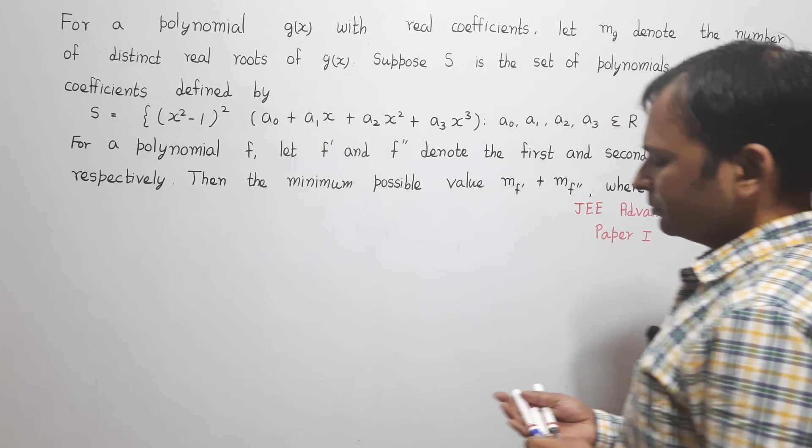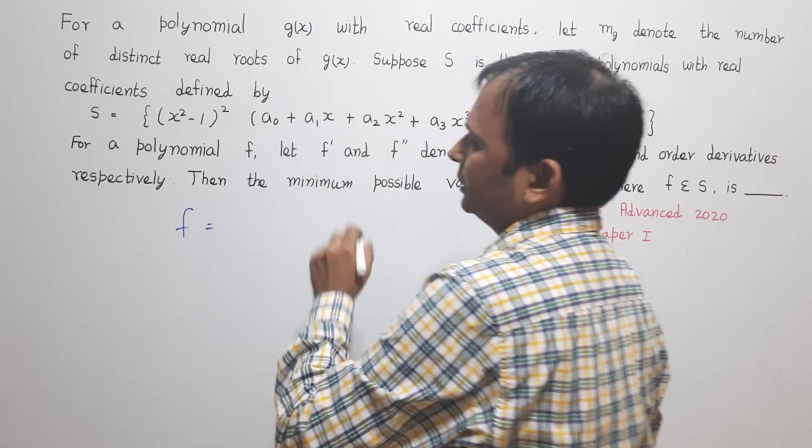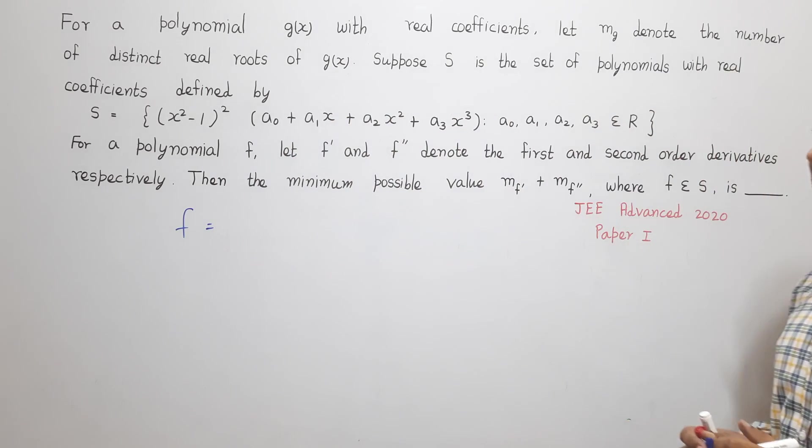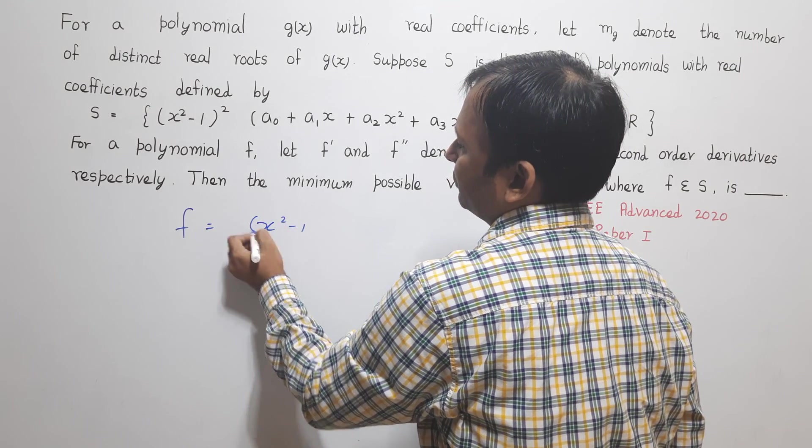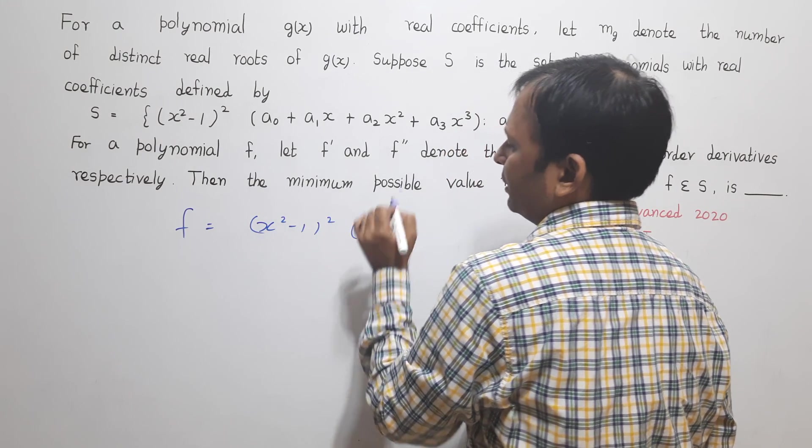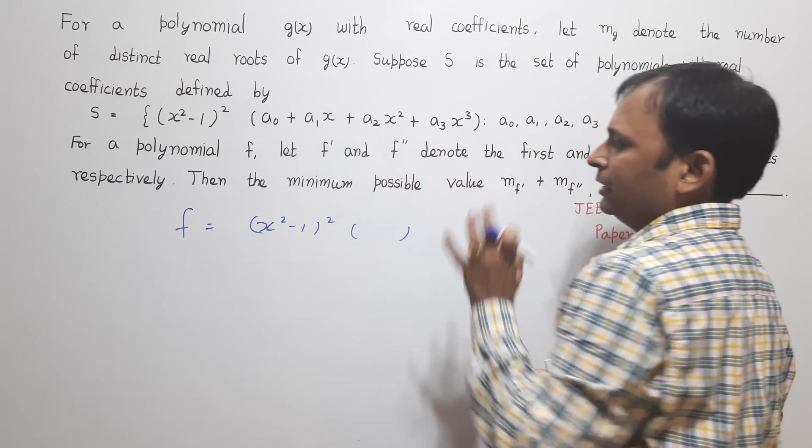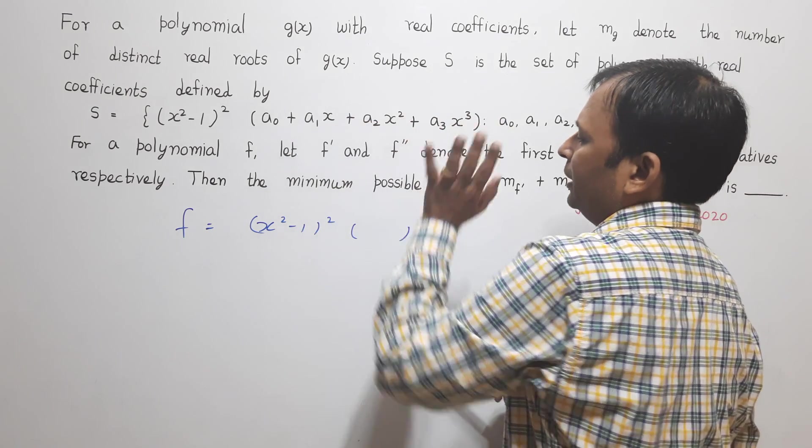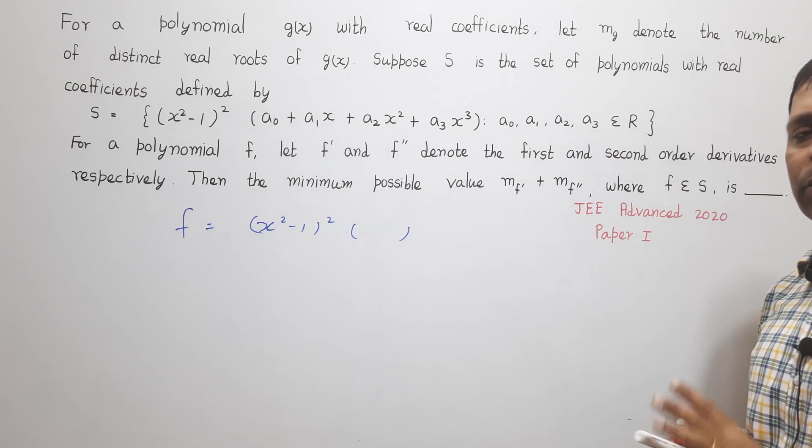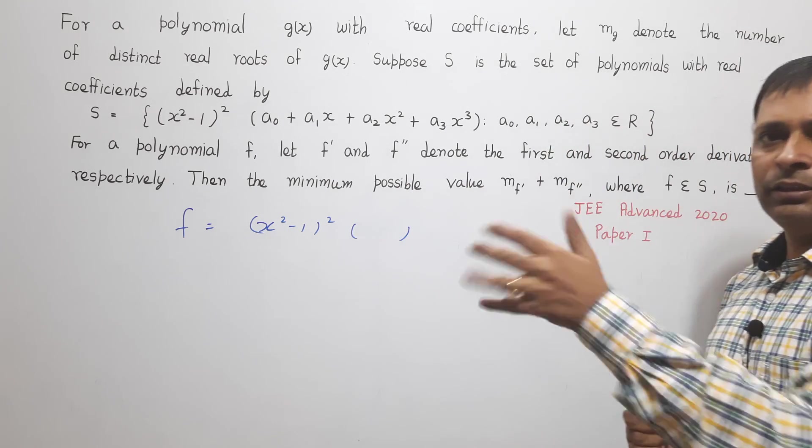I will say there is f which is there in the set S. This f will be of the form (x²-1)² multiplied by some bracket. I don't know what is this bracket because the question is not specified anything about it, but this bracket can contain any polynomial having the degree not more than 3. It can have any degree less than 3.